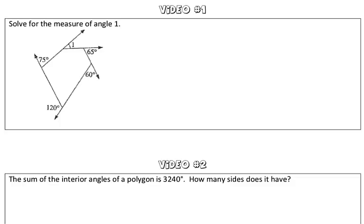In this first question, we are asked to solve for the measure of angle 1. Taking a look, we are given a lot of exterior angles, and these exterior angles all form linear pairs with the interior angles of the polygon.